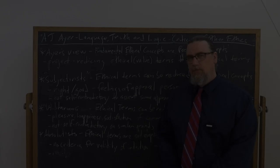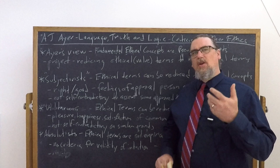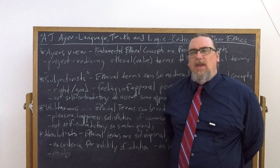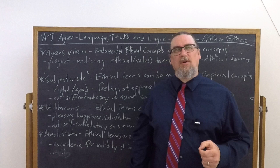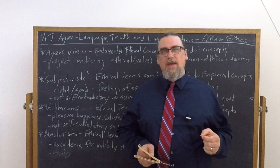In Chapter 6 of Language, Truth, and Logic, A.J. Ayer is going to provide criticisms of three main classes of ethical theories that were quite prevalent in ethics in his time. He views these as really the only main contenders that he has to go against, and we can call these the subjectivist, the utilitarian, and absolutist approaches in ethics.